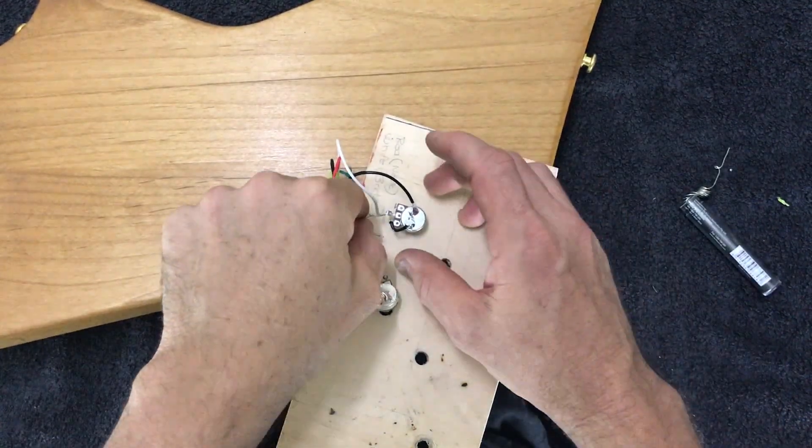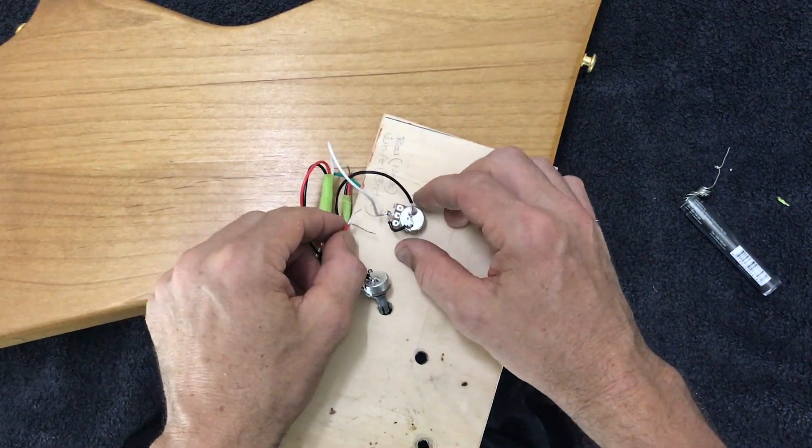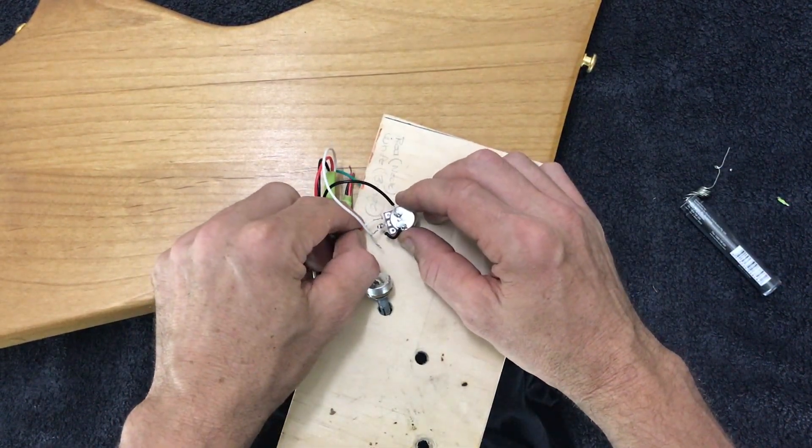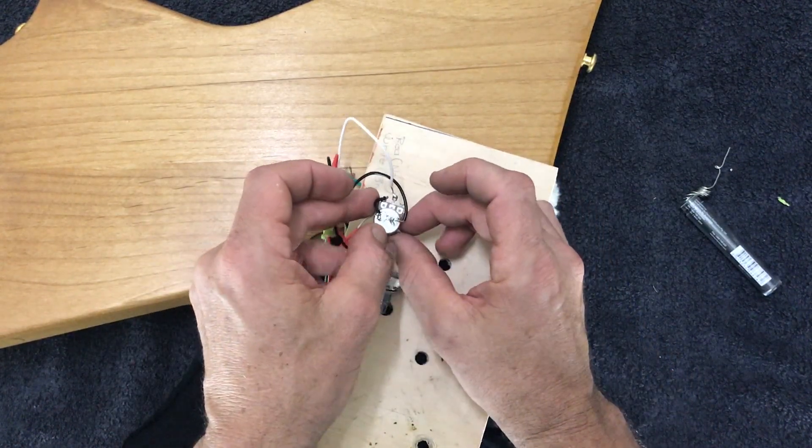Next, I'm going to run the bridge pickup wires to the bridge volume. The shielded wire, the active wire, goes to the input lug, which is the lug on the right if it's facing away.